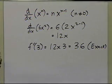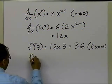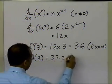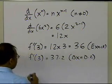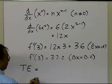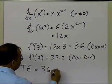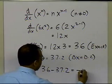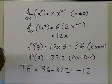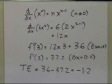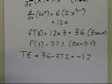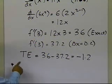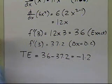However, using the approximate formula we got 37.2. So the truncation error is exact value minus approximate value: 36 minus 37.2 equals negative 1.2. You can see that because we approximated the mathematical procedure — choosing delta x as a finite number of 0.2 instead of approaching 0 — we get a truncation error of negative 1.2.